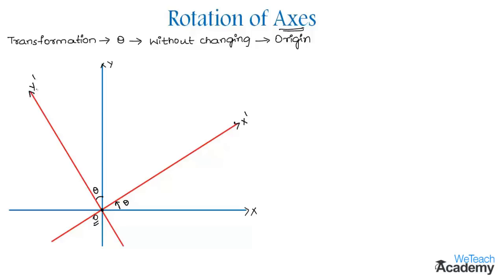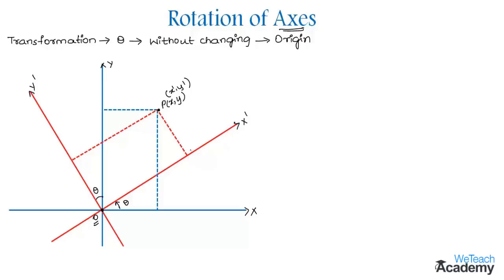Let us consider a point P with coordinates (x, y) in the older system x-o-y. Then the coordinates of P become (x-dash, y-dash) in the new system x-dash-o-y-dash. Let us give the name M to the foot of the perpendicular drawn from P upon o-x-dash, and L to the foot of the perpendicular drawn from P on o-x.